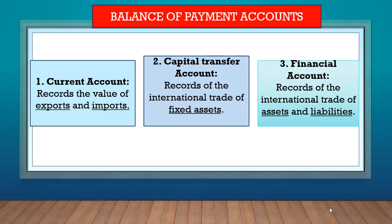Welcome to part 2 of the foreign exchange market. Just a recap from part 1: we learned that the balance of payment account has three sections — the current account section, the capital transfer account section, and the financial account section. Now we're going to look at an example of the first one, the current account.